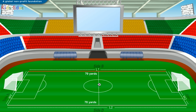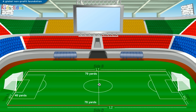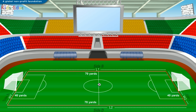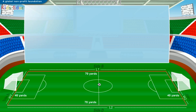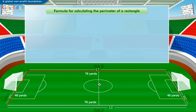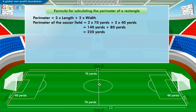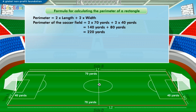Similarly, let's now measure the width of one side of the field. The width of side A of the soccer field is 40 yards, and since opposite sides are equal, side C is also 40 yards. Based on the formula, the perimeter of the soccer field is 2 multiplied by 70 yards plus 2 multiplied by 40 yards, which becomes 140 yards plus 80 yards, equal to 220 yards.